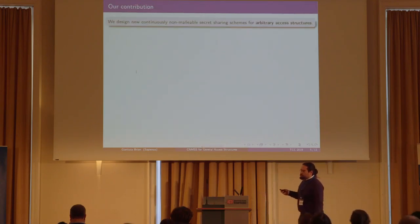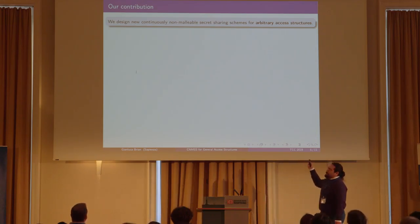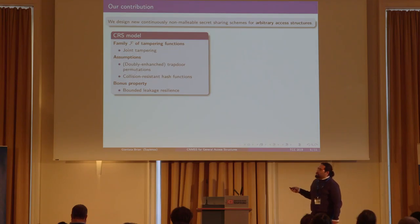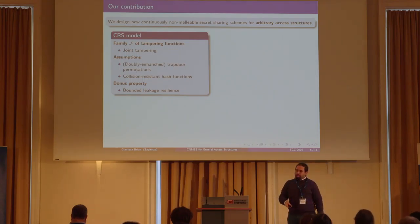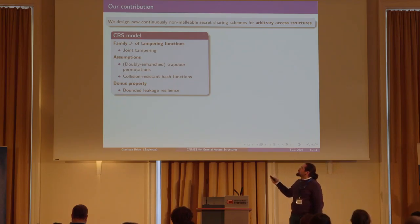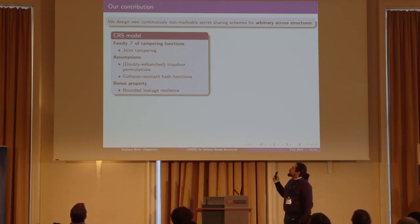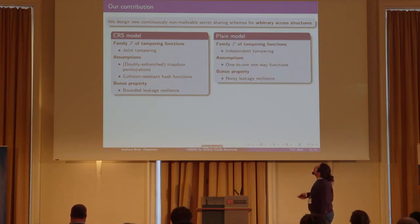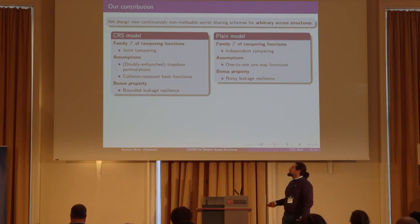We designed two new continuous non-malleable secret sharing schemes for arbitrary access structures. Our first scheme is in the common reference string (CRS) model, in which there is an initialization algorithm that outputs a reference string used for both the share and reconstruction algorithms. We achieve security against joint tampering, assuming one-way trapdoor permutations and collision-resistant hash functions, and as a bonus we achieve bounded leakage resilience. Our second construction is in the plain model — without a CRS or trusted third party — but in this model we obtain independent tampering security only.